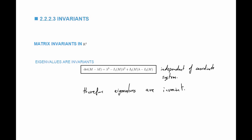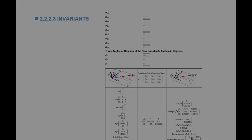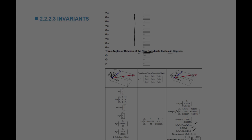On the website there is a tool that calculates all the invariants of a matrix. If you input the nine components of the matrix and the three angles of rotation of a new coordinate system, the tool will calculate the three invariants before and after transformation. You should try this by hand and verify that you're able to calculate these invariants and show that they're really independent of the coordinate system.